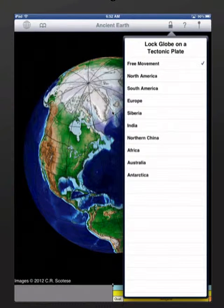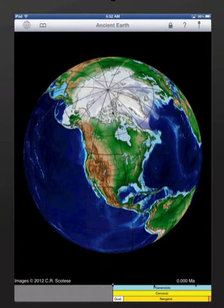a list of tectonic plates, and we can choose any of these. What will happen is Ancient Earth will focus on that plate alone. So if we choose North America, we're now focused on North America. Now notice that